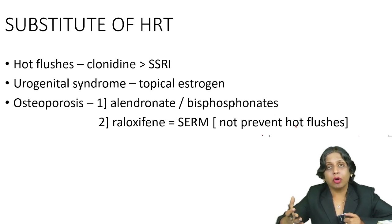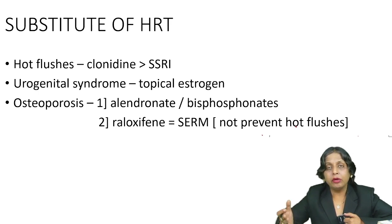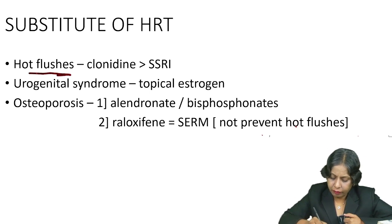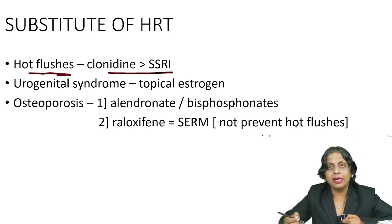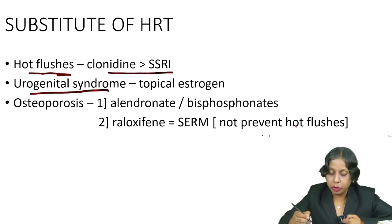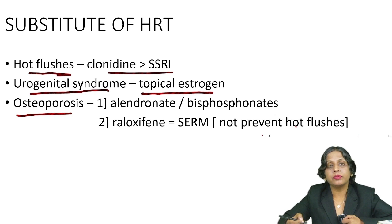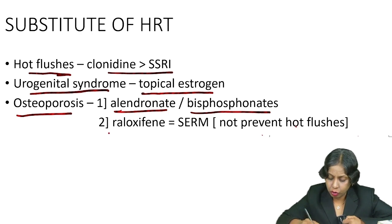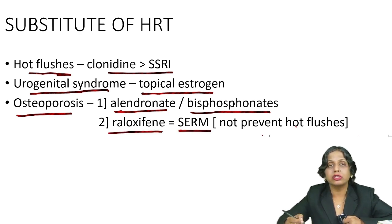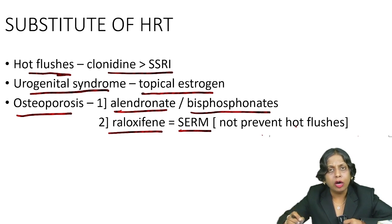If patients have these contraindications, it doesn't mean we give no drug — there are substitutes depending on symptoms. If the symptom is hot flushes, we give clonidine or SSRIs (clonidine is preferred). For urogenital syndrome or urogenital dryness, we can give topical estrogen, which will not cause systemic side effects. For osteoporosis, the first choice is alendronate, which is a bisphosphonate, and the second choice is raloxifene, a selective estrogen receptor modulator — it is only estrogenic at bones, so it prevents osteoporosis but will not prevent hot flushes.